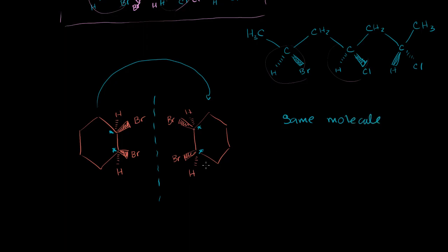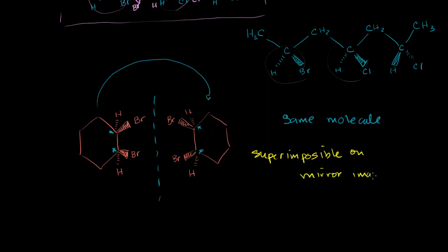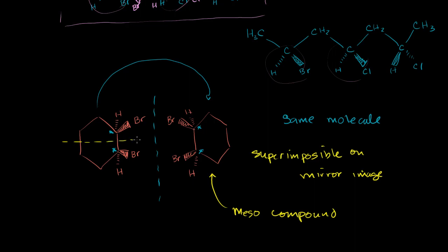This is interesting, and we saw this when we first learned about chirality. Even though we have two chiral centers, this is not a chiral molecule. It is the same thing as its mirror image — it is superimposable on its mirror image. So even though it has chiral carbons in it, it is not a chiral molecule. We call these meso compounds. We can point to one of them because they really are the same compound — it has chiral carbons, but it is not a chiral compound. The way to spot these is that you have chiral centers, but there is a line of symmetry: these two sides of the compound are mirror images of each other.